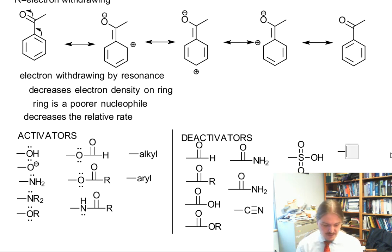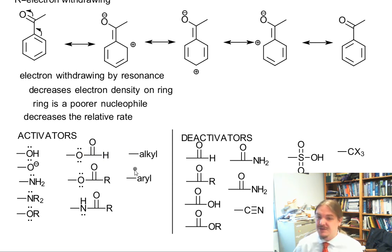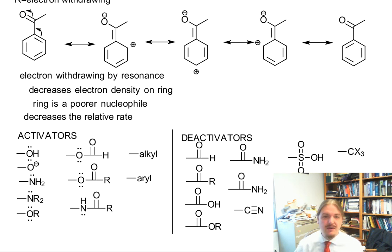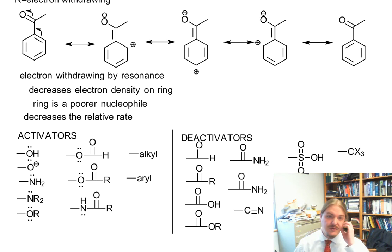Things that are electron withdrawing by induction include trihalomethyl groups, especially when X is fluorine. Carbon-halogen bonds are polarized opposite to carbon-hydrogen bonds, which is what makes alkyl groups electron donating by induction. Protonated amines and quaternary ammonium salts are also in this category — the nitrogen no longer has a lone pair because it's protonated or has alkyl groups on it.